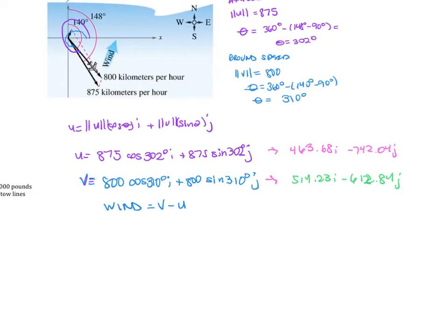This is going to be, let's do the bigger number first, that's why I said V, 514.23 minus 463.68 and then negative 612.84 and you're subtracting it. So minus a minus 742.04, so that becomes a positive.